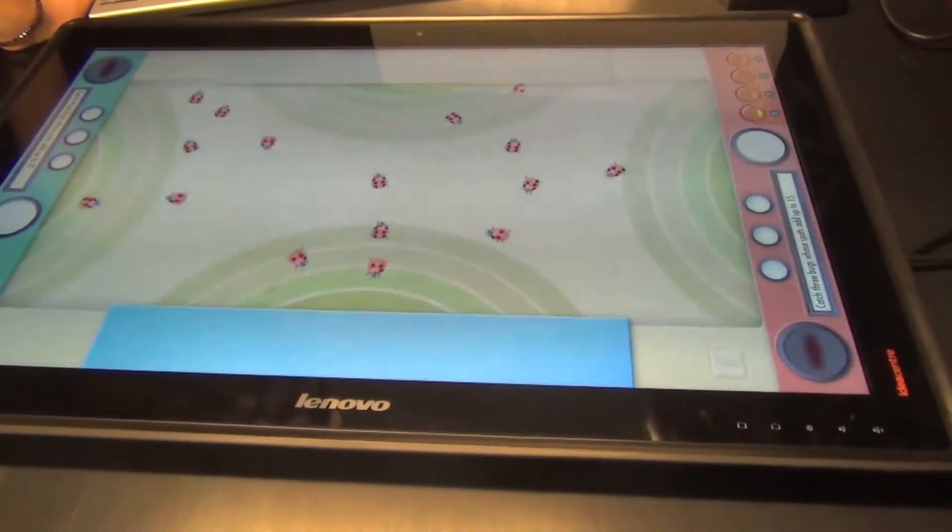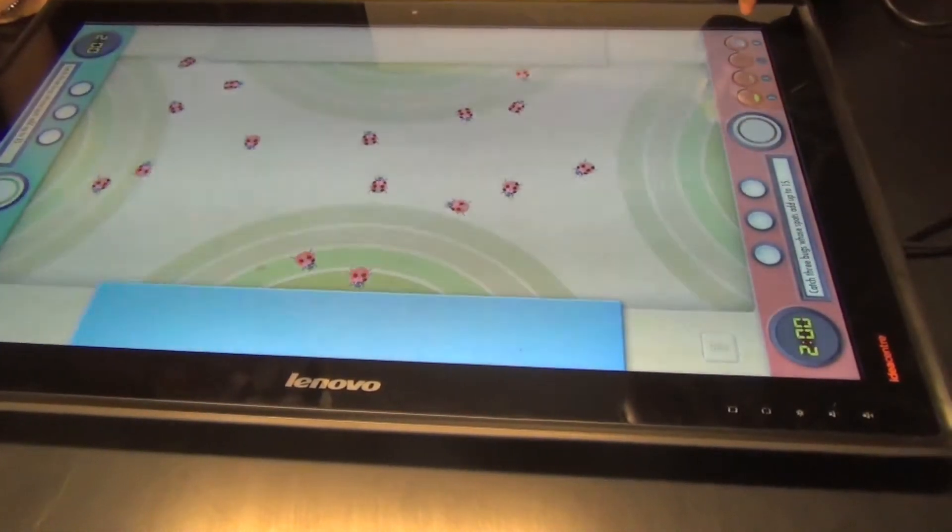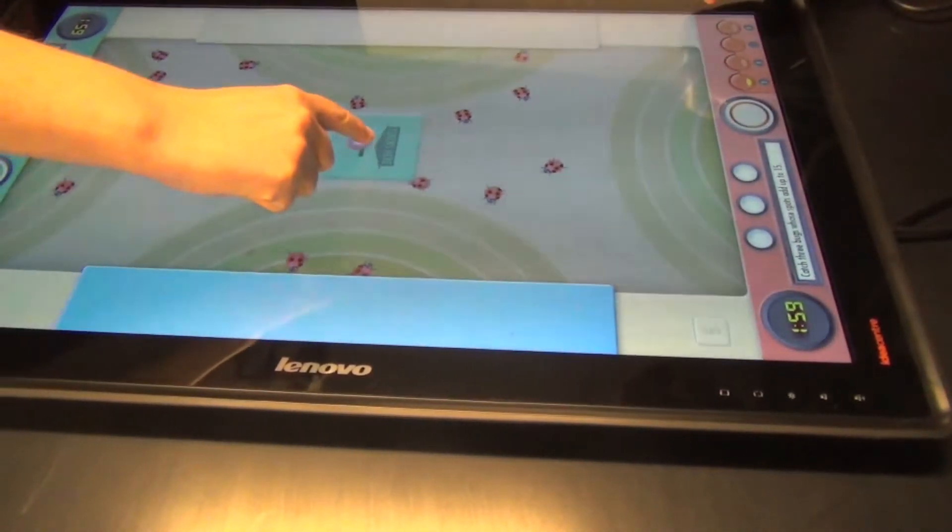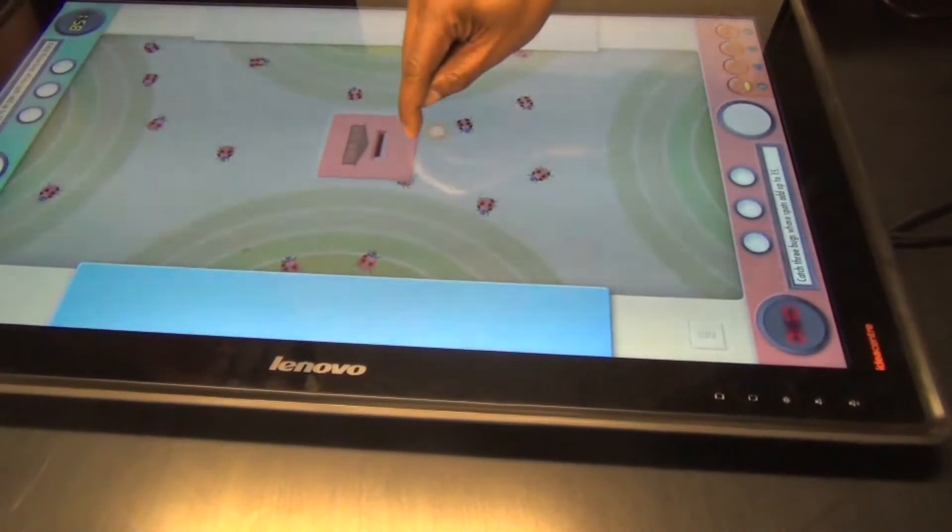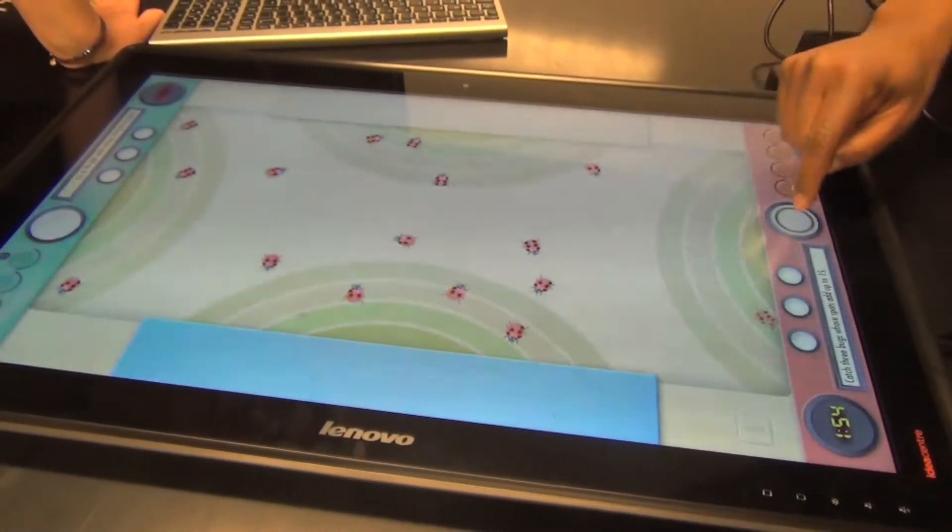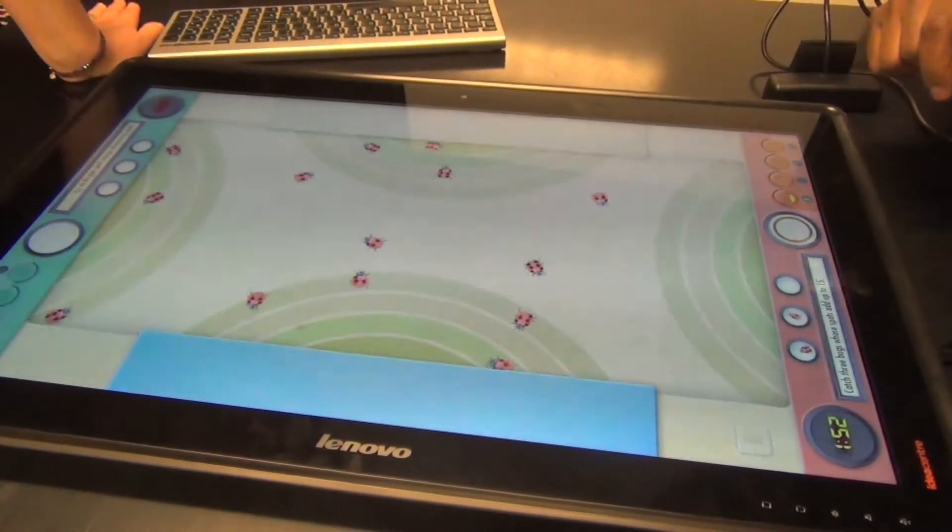Ready? Catch three bugs whose spots add up to 15. Move your token here to use it. I'm locking him out. Locked out. Now I can lock that. Wait! And then I can lock her out. Locked out. So I'm locked out.